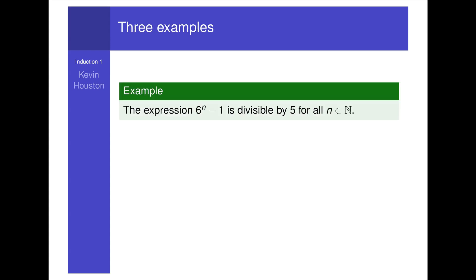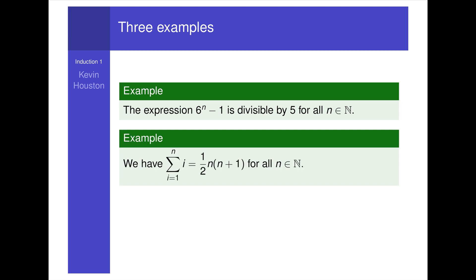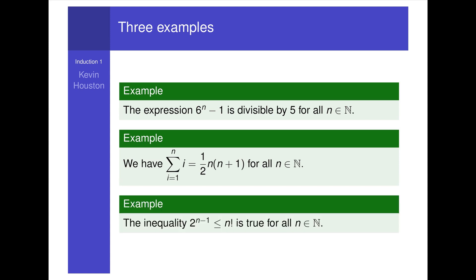Example one: the expression 6 to the power n minus 1 is divisible by 5, for all n in the natural numbers. We say a is divisible by b if there is no remainder when we divide a by b. So 30 is divisible by 5 and by 3. Second example: the summation of i, where i goes from 1 up to n, equals one-half of n times n plus 1, for all n in the natural numbers. Third example: the inequality 2 to the power n minus 1 is less than or equal to n factorial, true for all n in the natural numbers. Here n factorial is the product of the first n natural numbers.